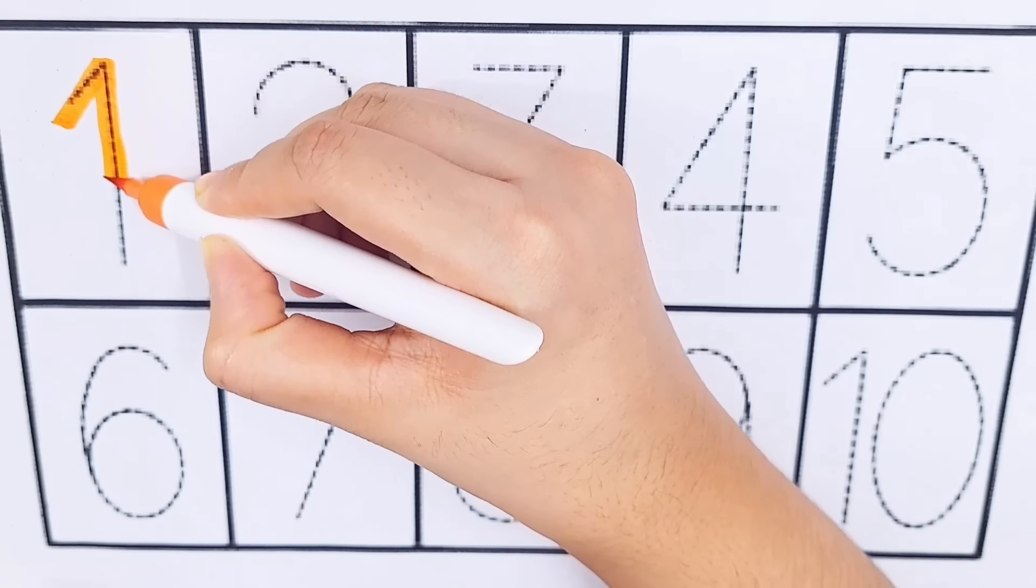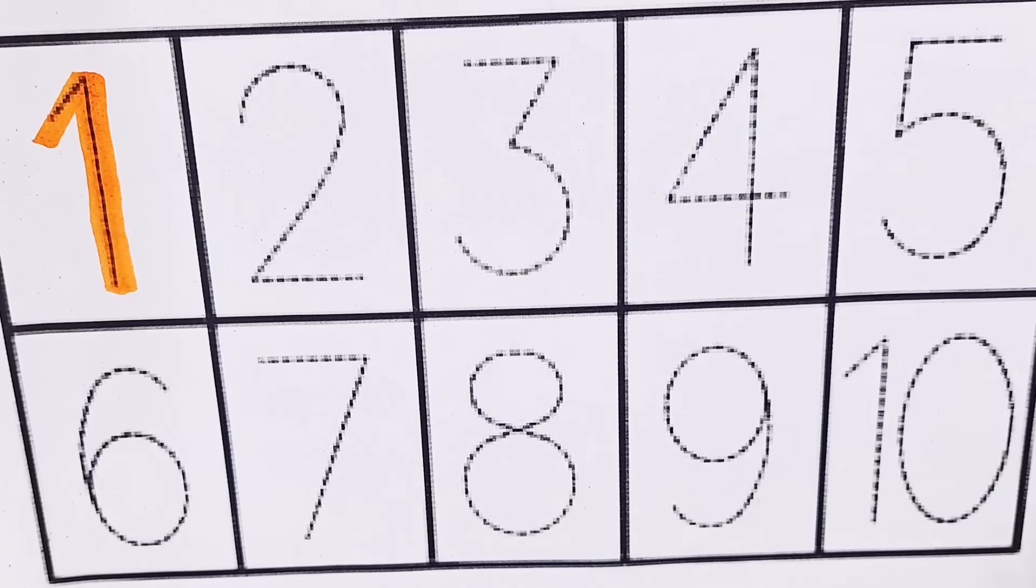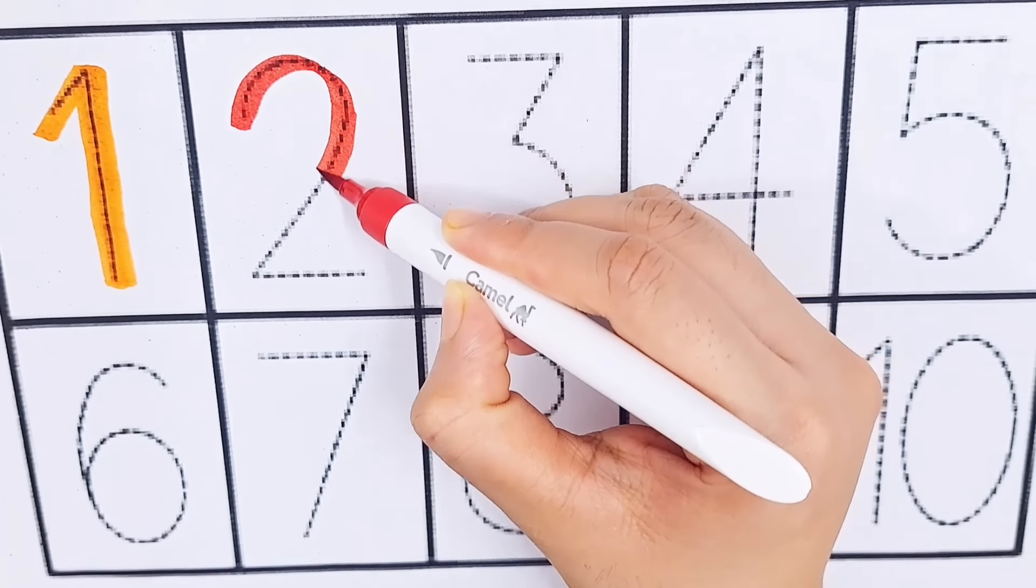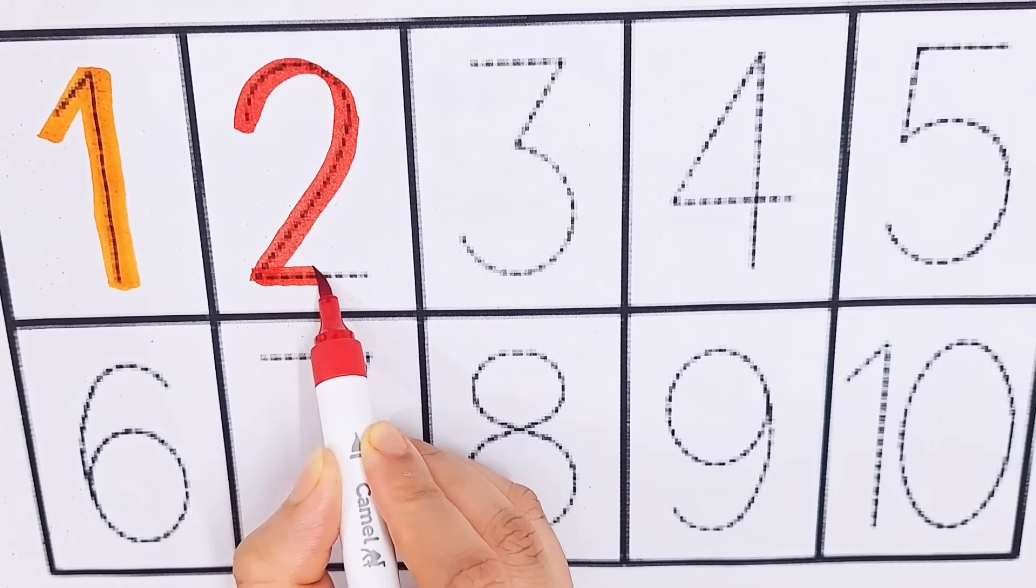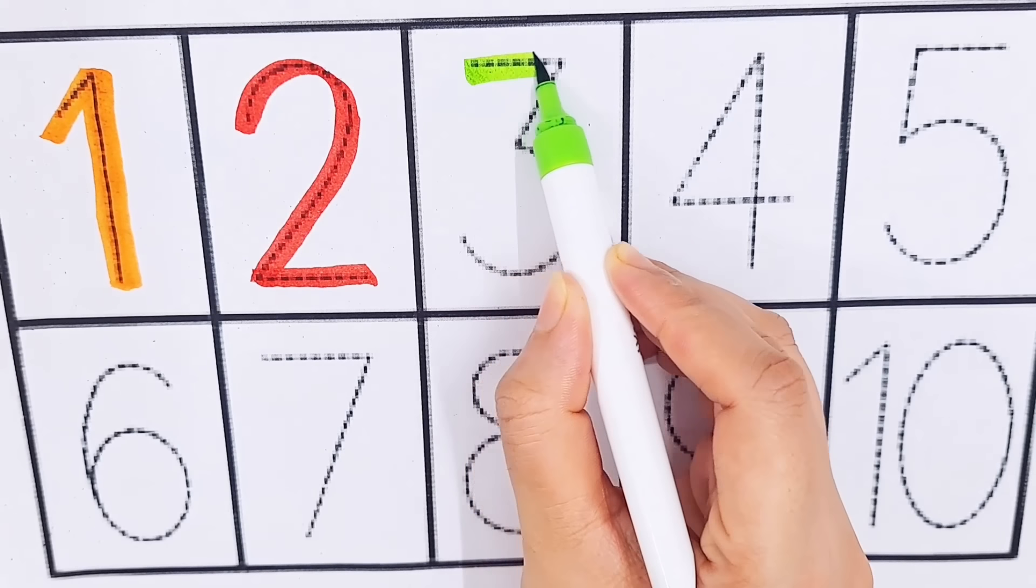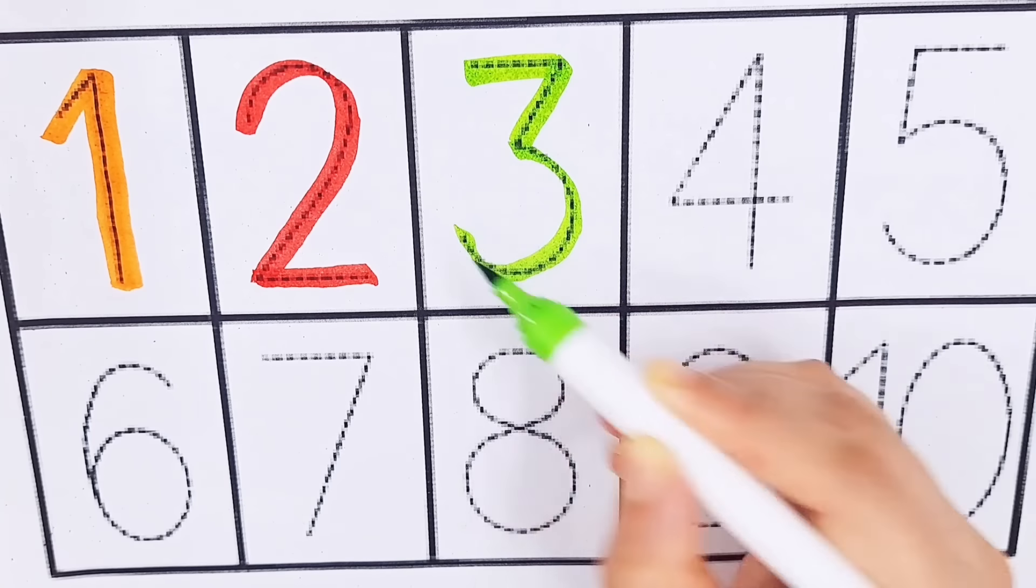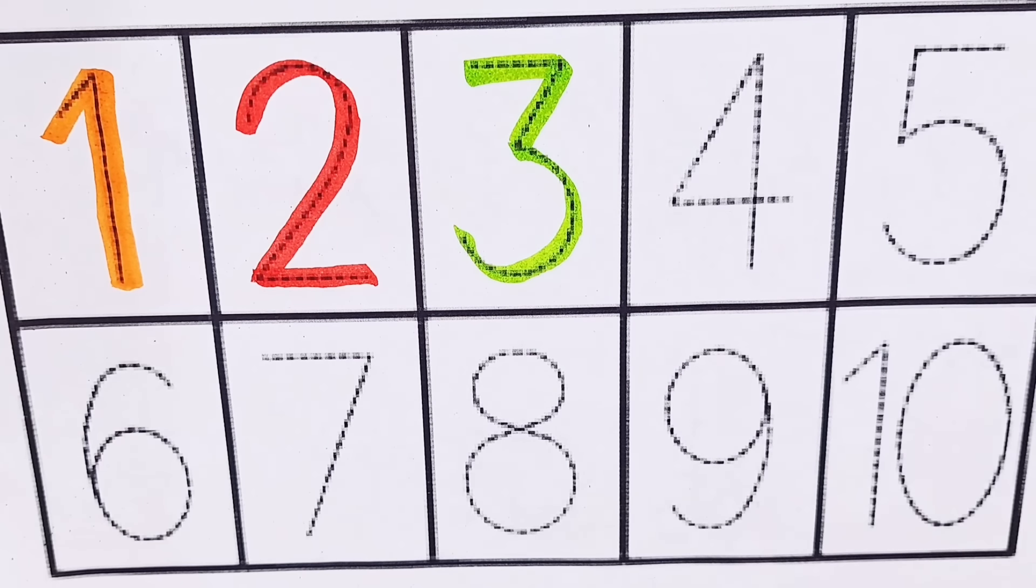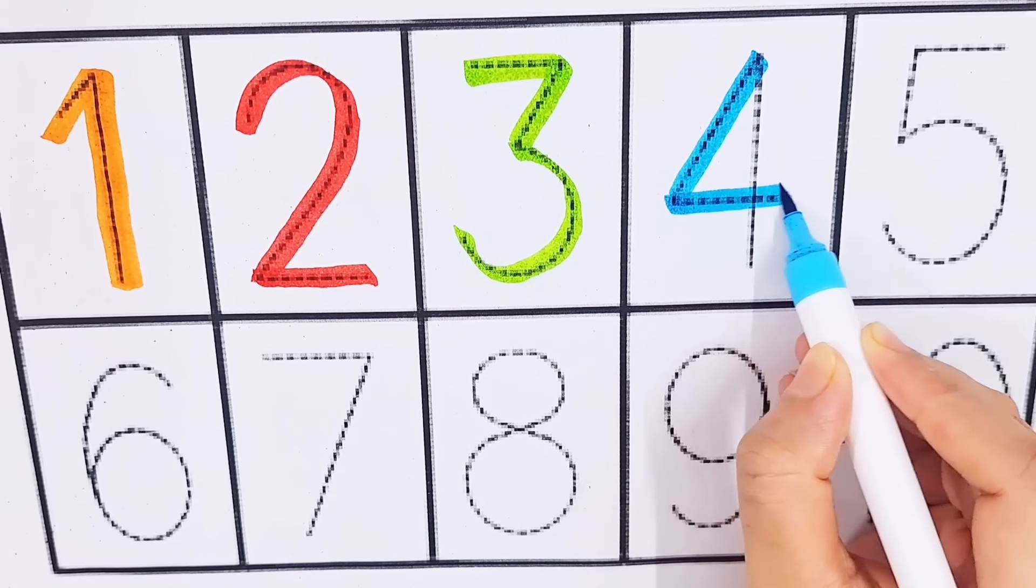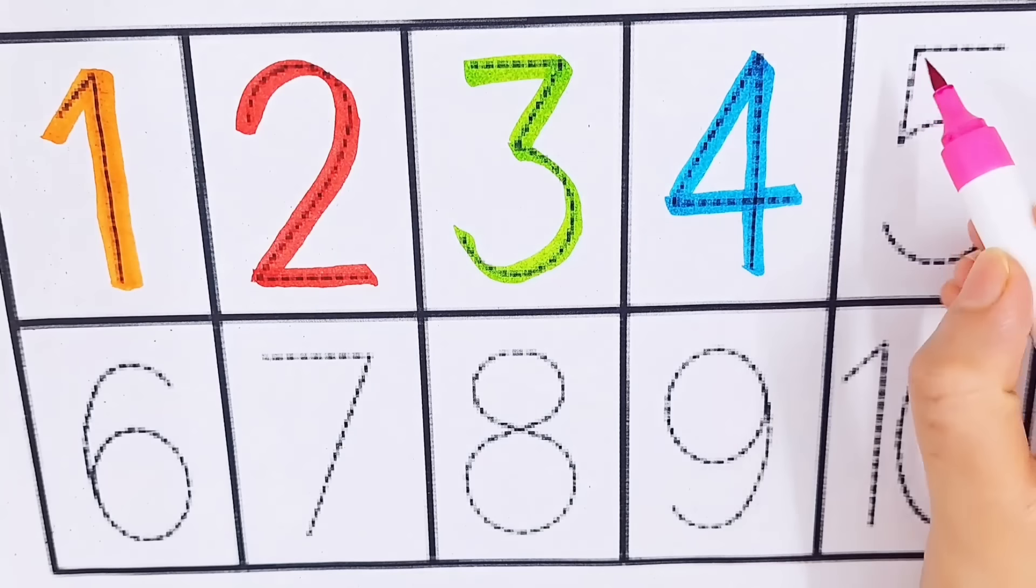Orange color, number one, number one. Red color, number two, number two. Light green color, number one, number two. Light green color, number three. Purple color, number 5.